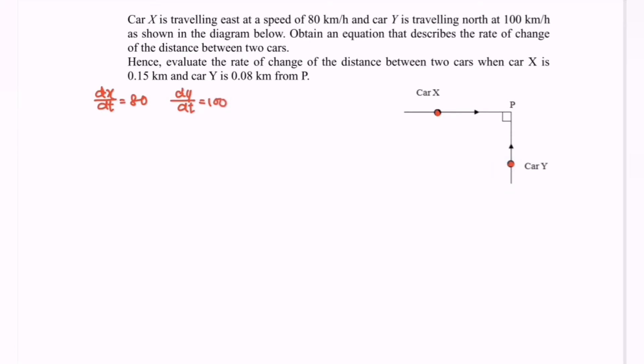Imagine this is the X axis and this is the Y axis. That's why I denoted it as dx/dt and dy/dt. Show me the diagram below. Obtain an equation that describes the rate of change of the distance between two cars. Imagine the situation - it is an XY axis, so we have a right angle triangle.